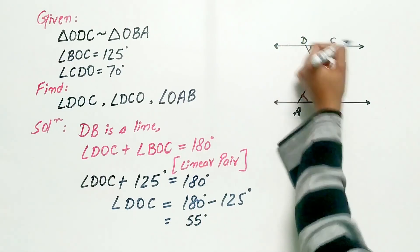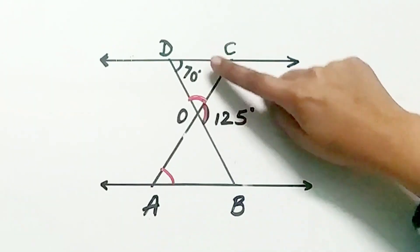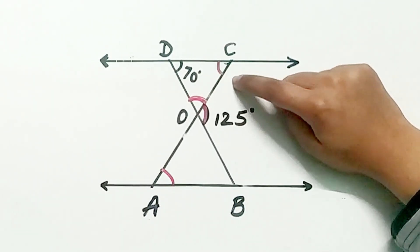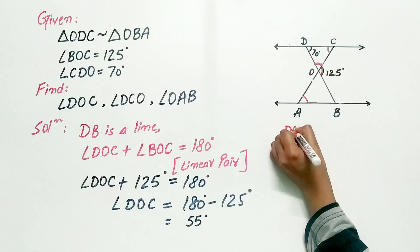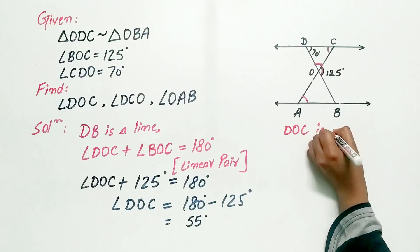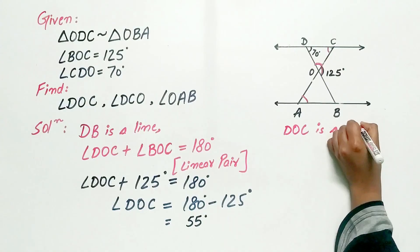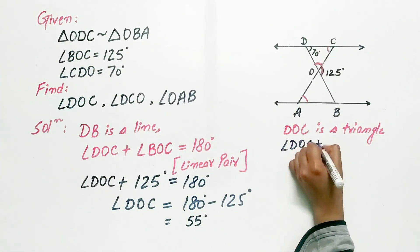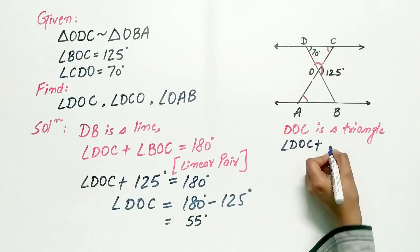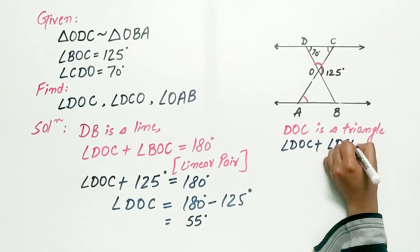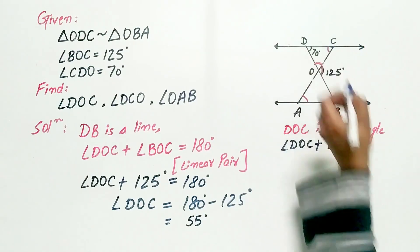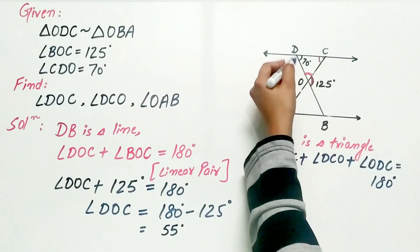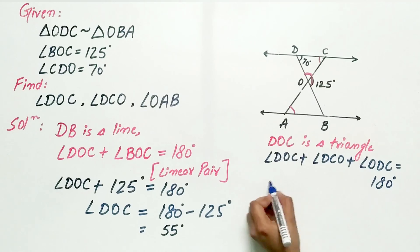Now, DOC is a triangle, we know the value of two angles, hence we can easily find out the third angle. Let's do it. DOC is a triangle, angle DOC plus angle DCO plus angle ODC is equal to, angle DOC is 55 degree.